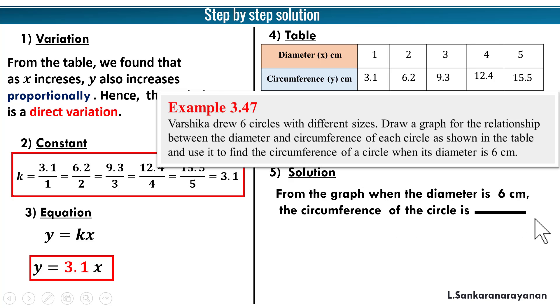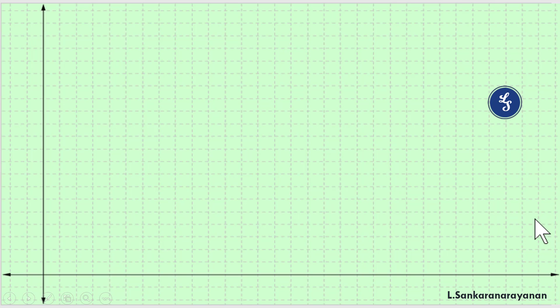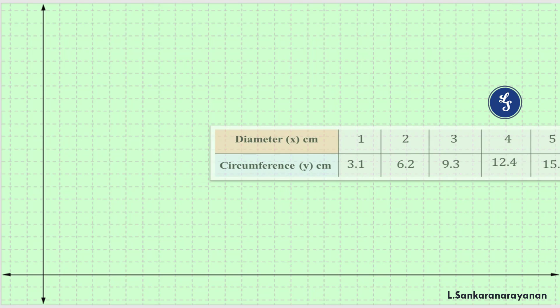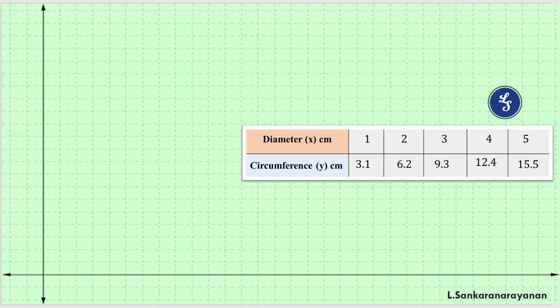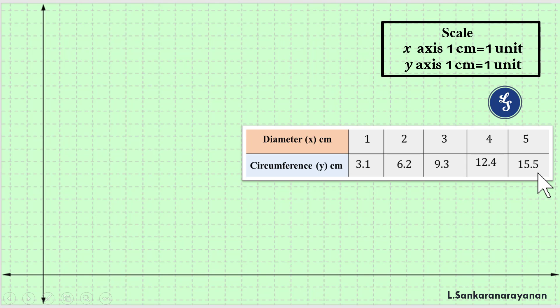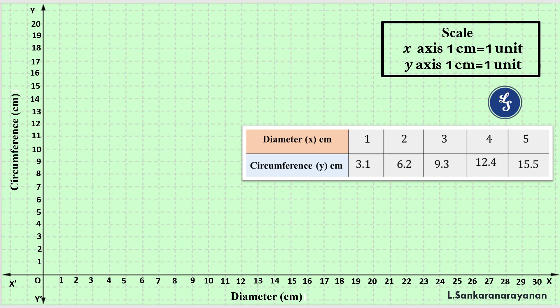Now we are going to draw the graph. First you put the axis like that, x and y axis. Here we take only positive directions. Look at this, this is the table. Here 1 to 5, here 3.1 to 15.55. So we take both x-axis and y-axis as one centimeter equals one unit. You put it like this: x and y. What is x? Diameter in centimeter. Circumference in centimeter.